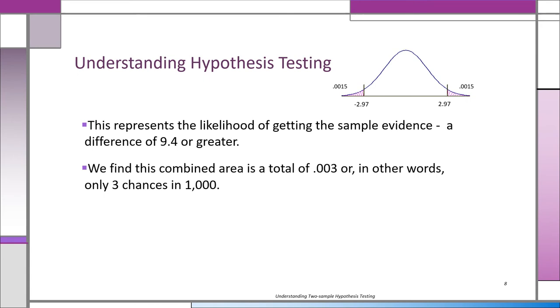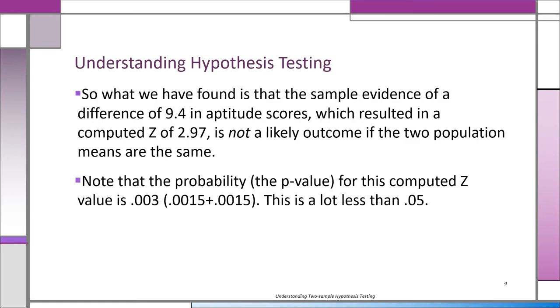Essentially, what we find is there's only three chances in a thousand, if there's actually no difference between men and women, of getting a difference of 9.4 or greater. We're doing it as a two-tailed test. This is not what should be happening if the straw man is true.